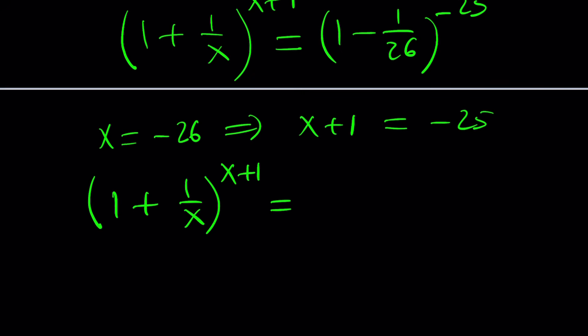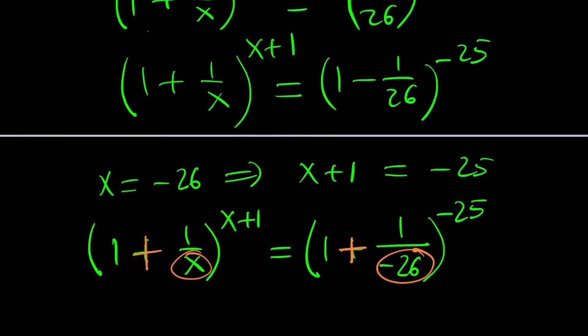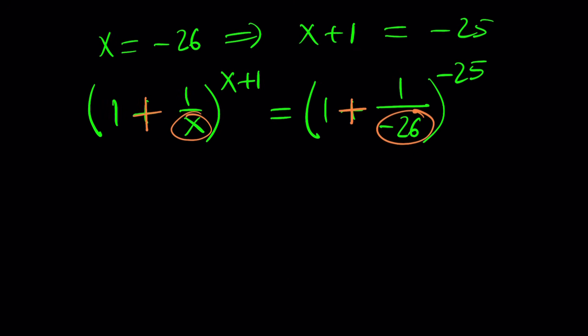So we can go ahead and now write it as (1 + 1/(-26))^(-25), because it's the same thing, right? I've noticed that, in this case, x is negative 26. And we have a plus sign, because otherwise, if they're different, you can't really say that, right? So now they are the same.